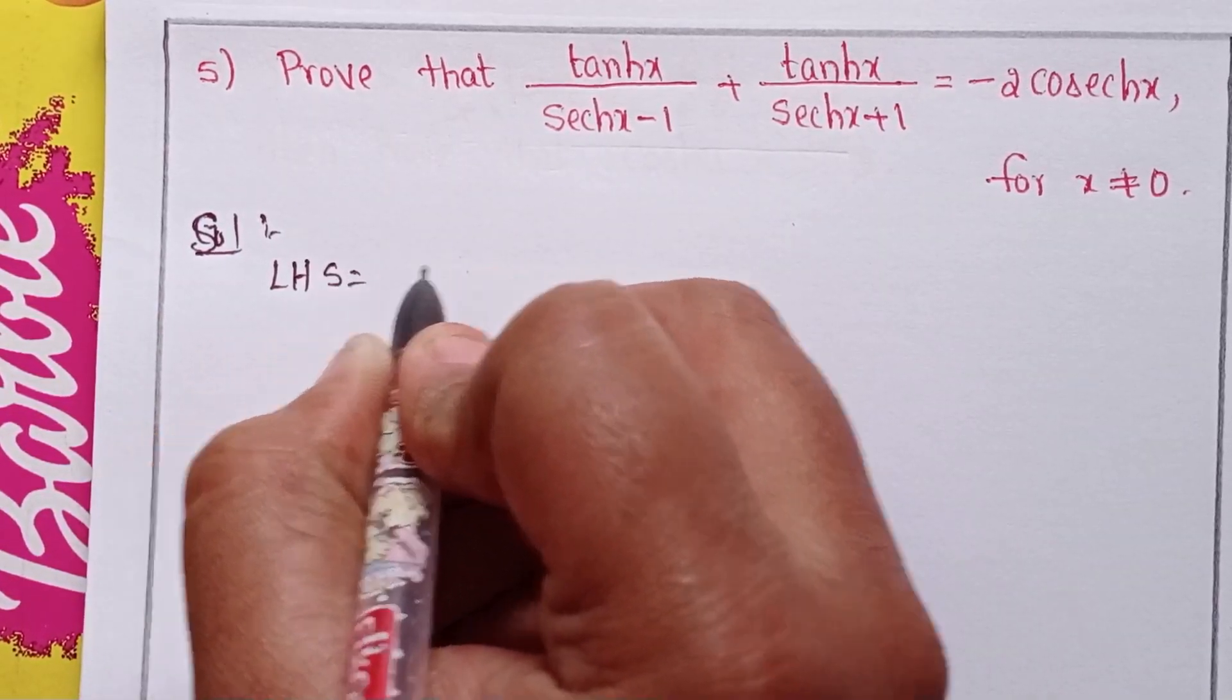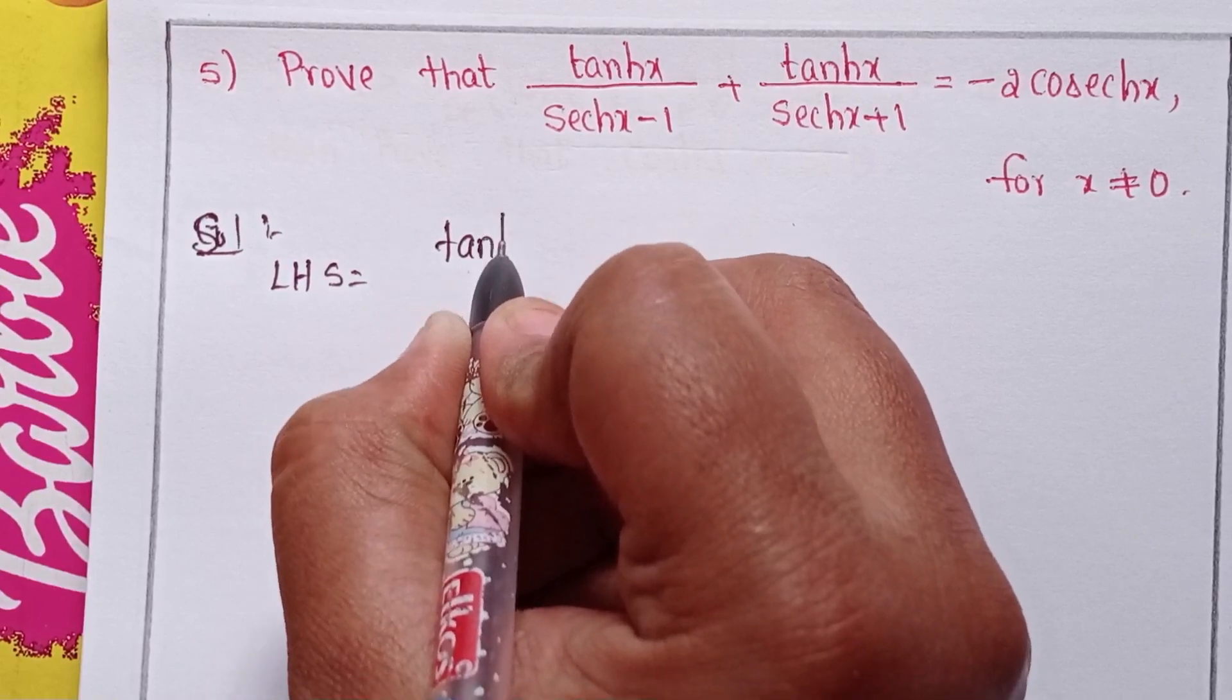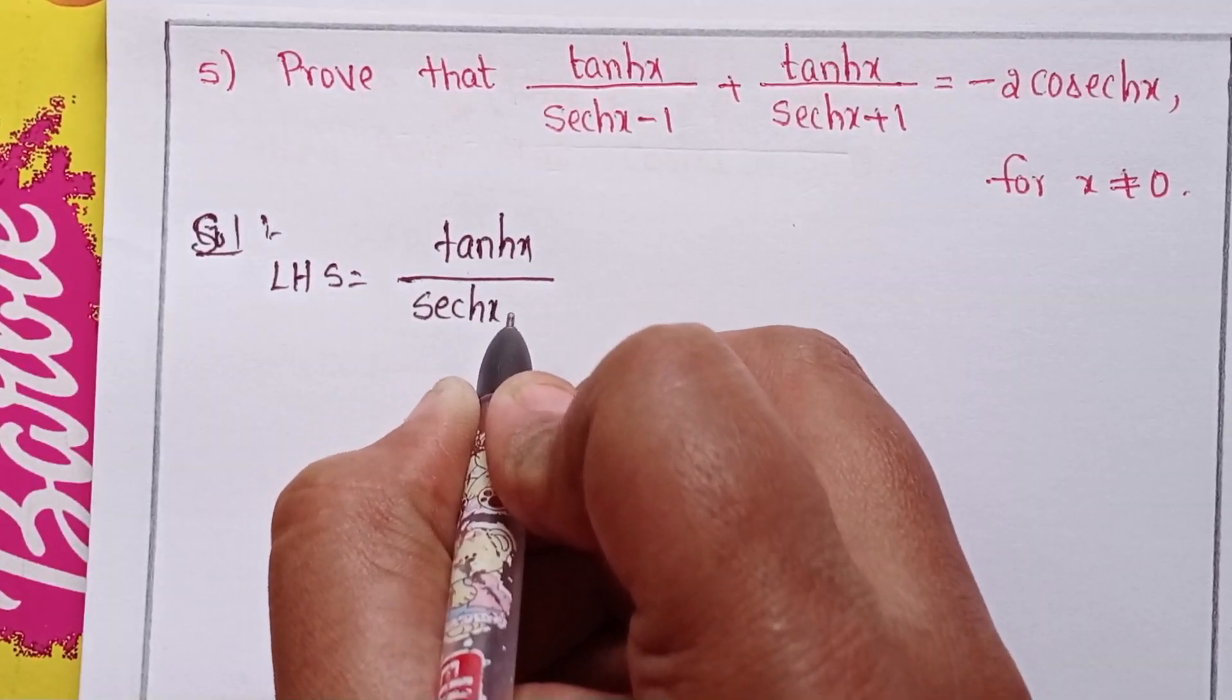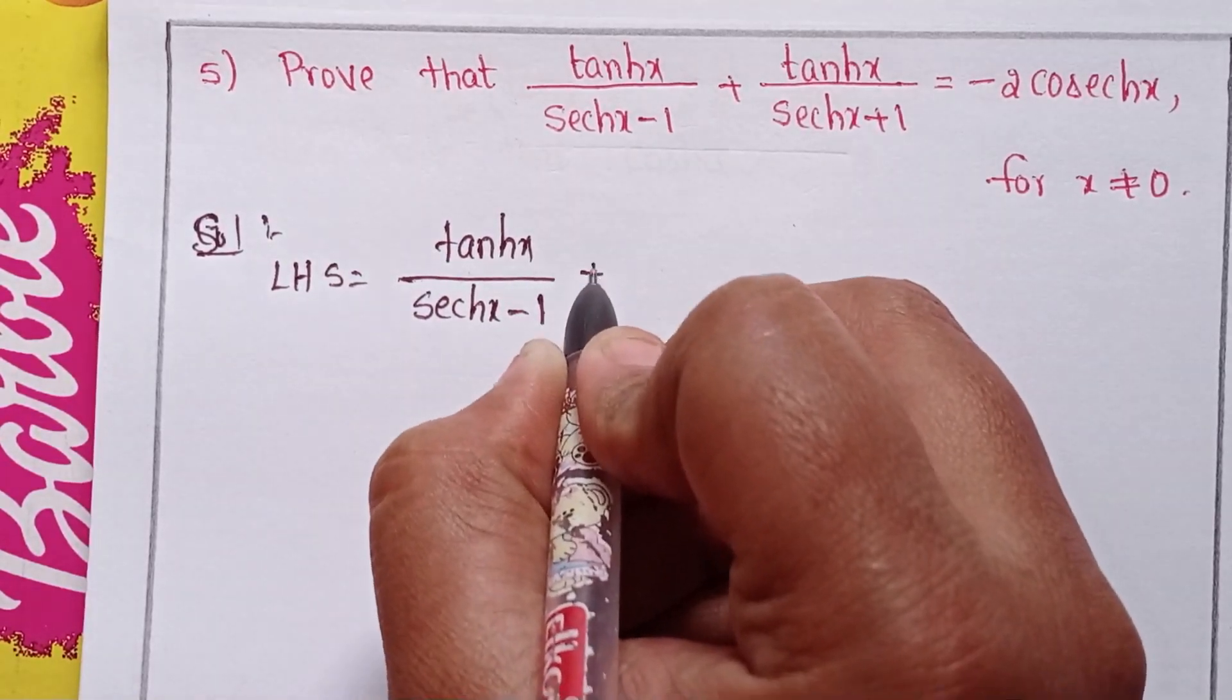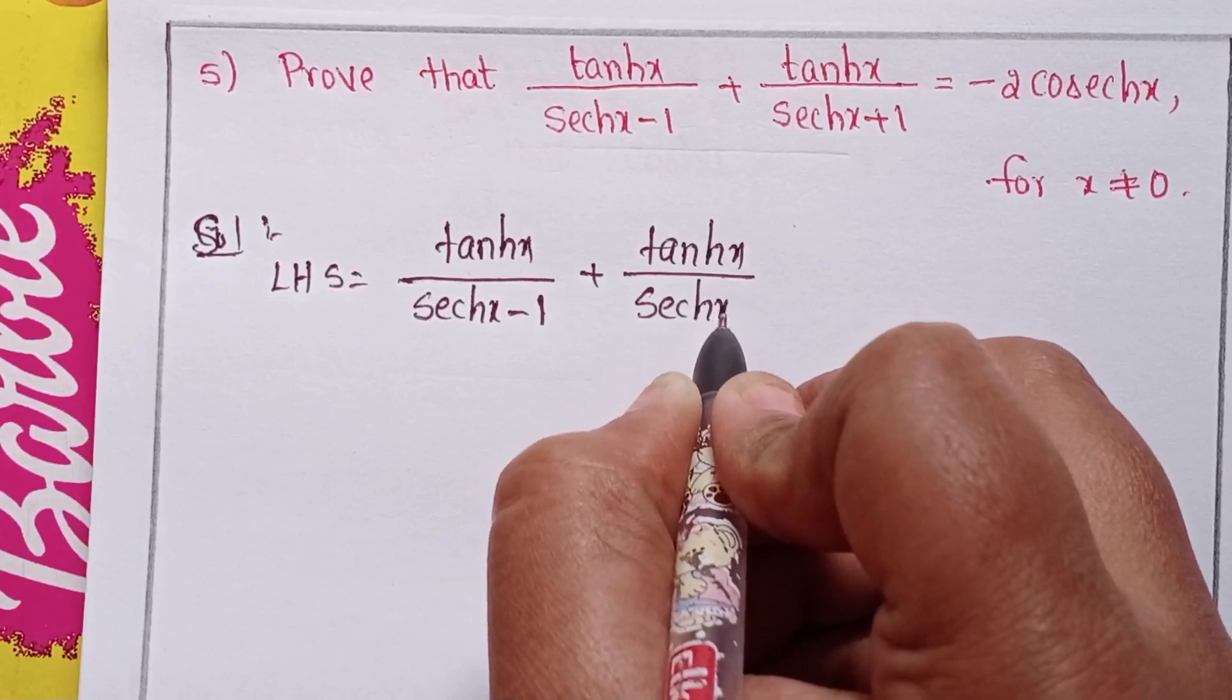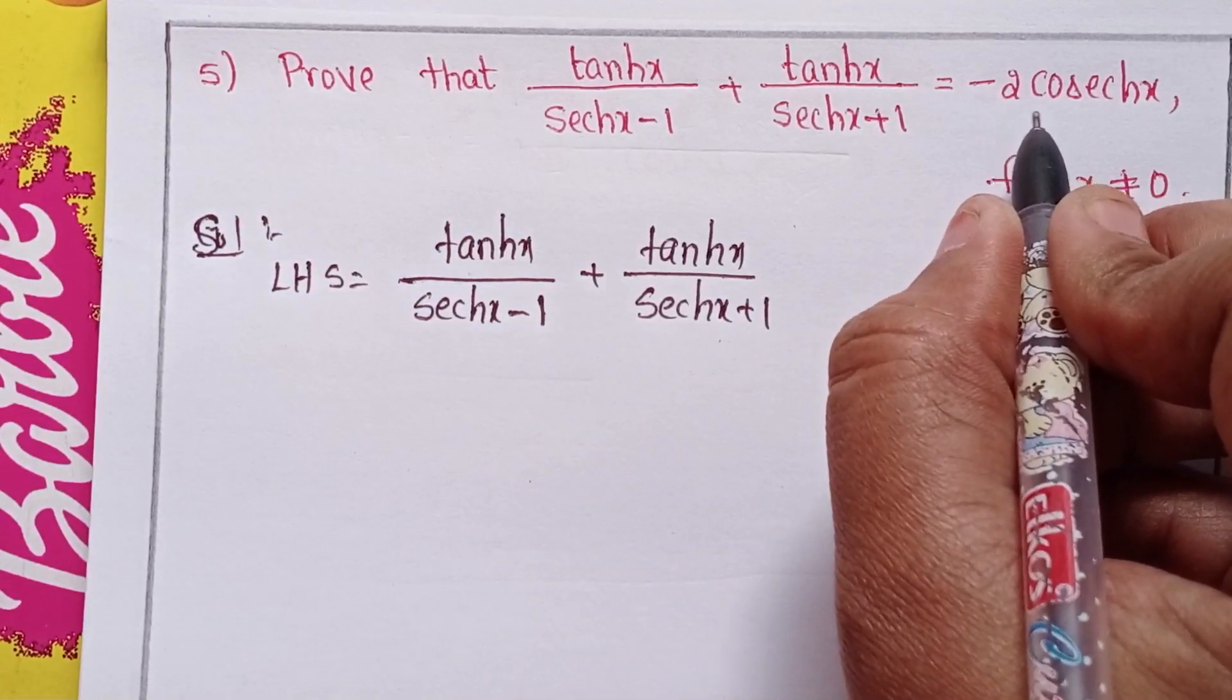LHS equals tanh x over sech x minus 1 plus tanh x over sech x plus 1.